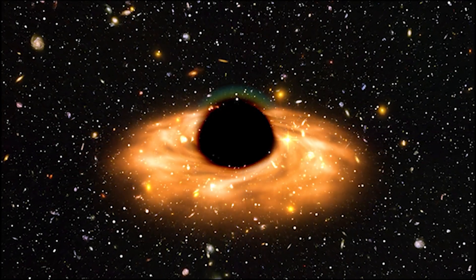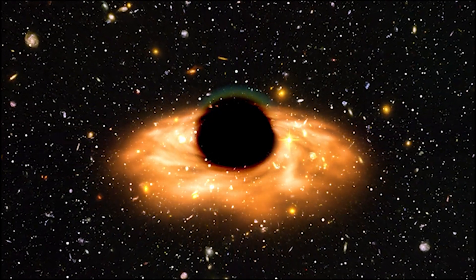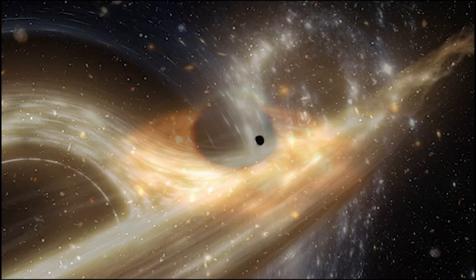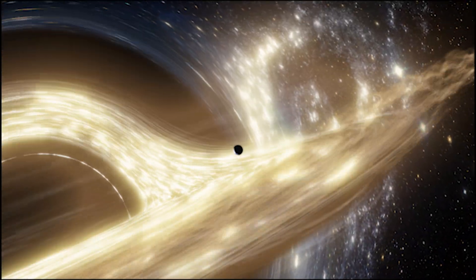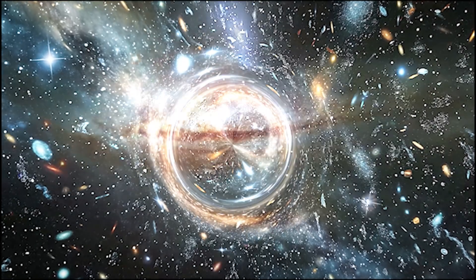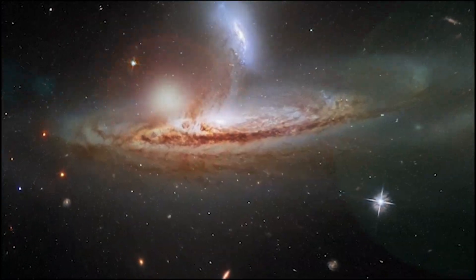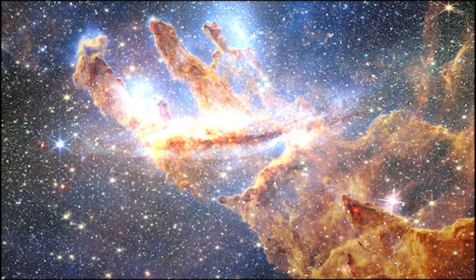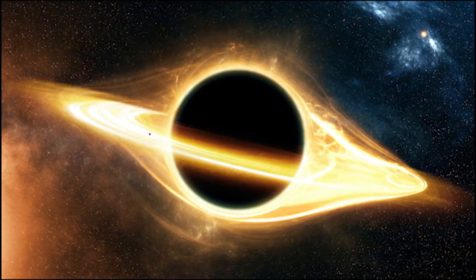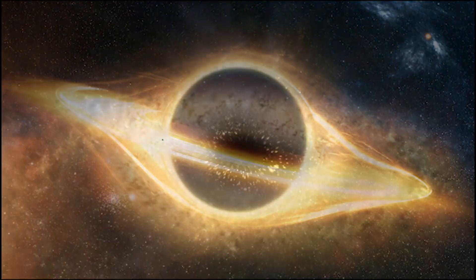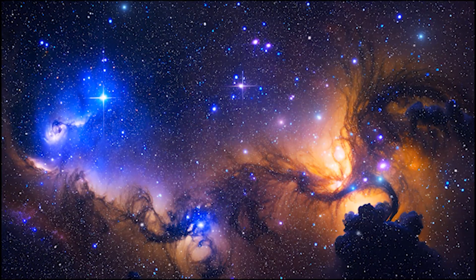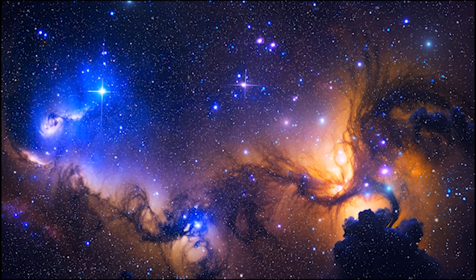Traditionally, it was believed that black holes formed primarily from the remnants of massive stars. However, the observation of a supermassive black hole formed just 470 million years after the Big Bang suggests an alternative, radical possibility – the direct collapse of massive gas clouds. The idea that black holes in the early universe could form directly from collapsing gas clouds, without going through the intermediary step of star formation.